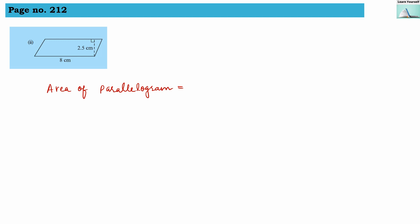Our second example. In this also we have to find out the area of parallelogram. Our formula is base into height. So this is going to be the base and this is our height. So base is 8 centimeter whereas height is 2.5 centimeter. Let us multiply them. 25 into 8.